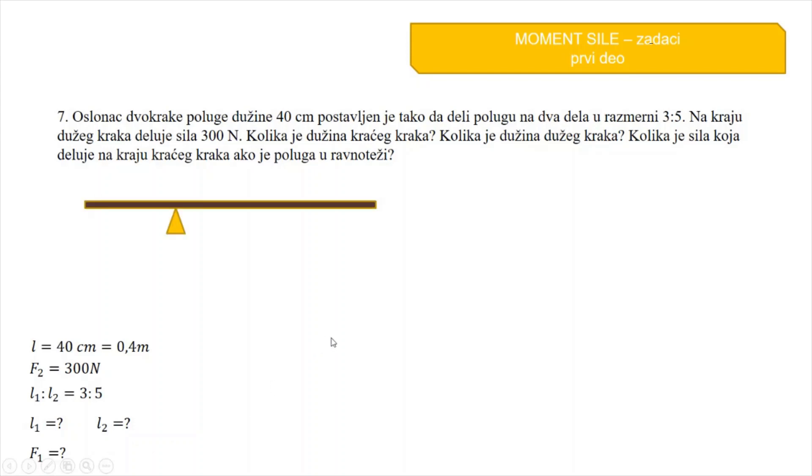F2 to je na kraju dužeg kraka, deluje sila 300 N i dato je da su kraci u odnosu 3 prema 5. Traži se koliko je L1, koliko je L2 i traži se koliko je F1. Crtamo sliku. Ovo je dvokraka poluga. Na jednom kraju poluge deluje sila F1 na kraku L1. Na drugoj strani, na kraku L2, deluje sila F2. Sila F1 će praviti moment M1, a sila F2 će praviti moment M2. Ukup data mi u zadatku ukupna dužina ove poluge L i to je 40 cm.